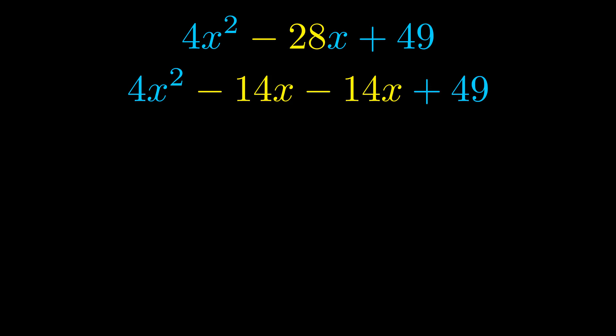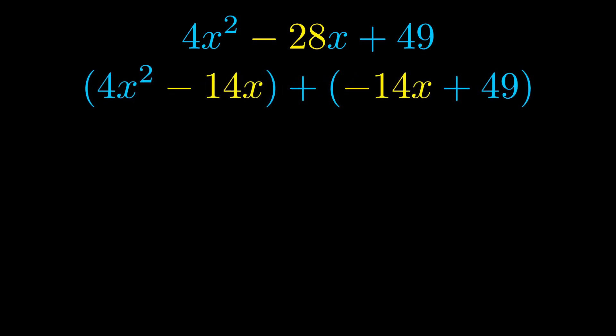Once we've done this we go ahead and we put parentheses around the first term and the last term. And we do that so that we can take the greatest common factor out of both terms. We can see the greatest common factor is now outside in green. Notice also how what remains inside of the parentheses is the same in both cases.